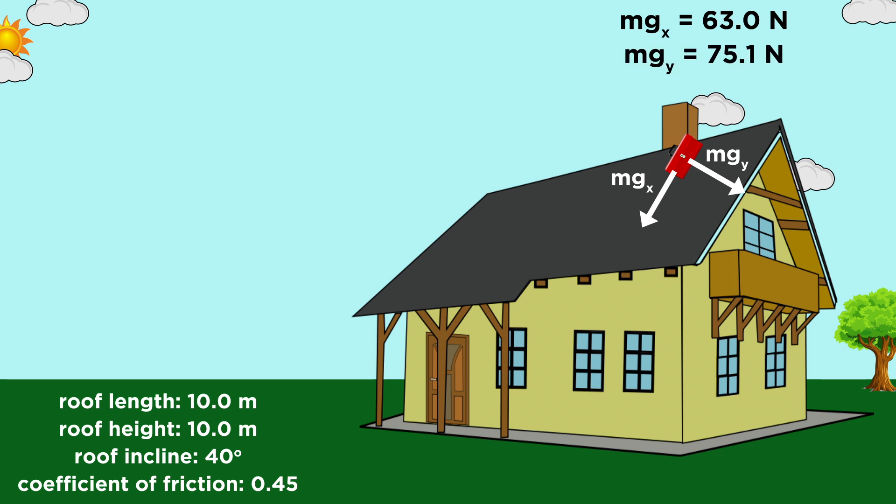Let's get rid of what we no longer need, and we are left with these two components of the gravitational force. We know there is also a normal force, which is perpendicular to the roof, and therefore equal in magnitude to this perpendicular component, but opposite in direction.